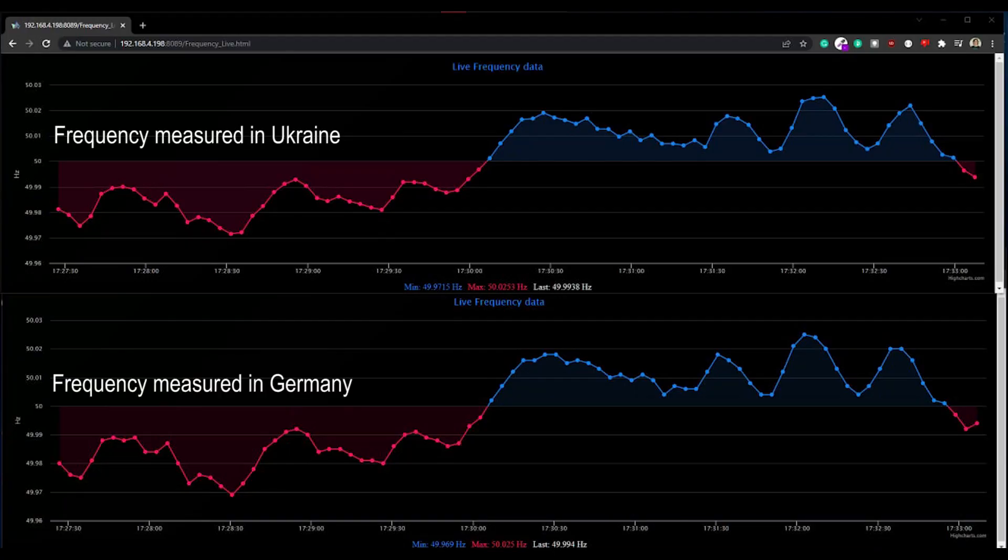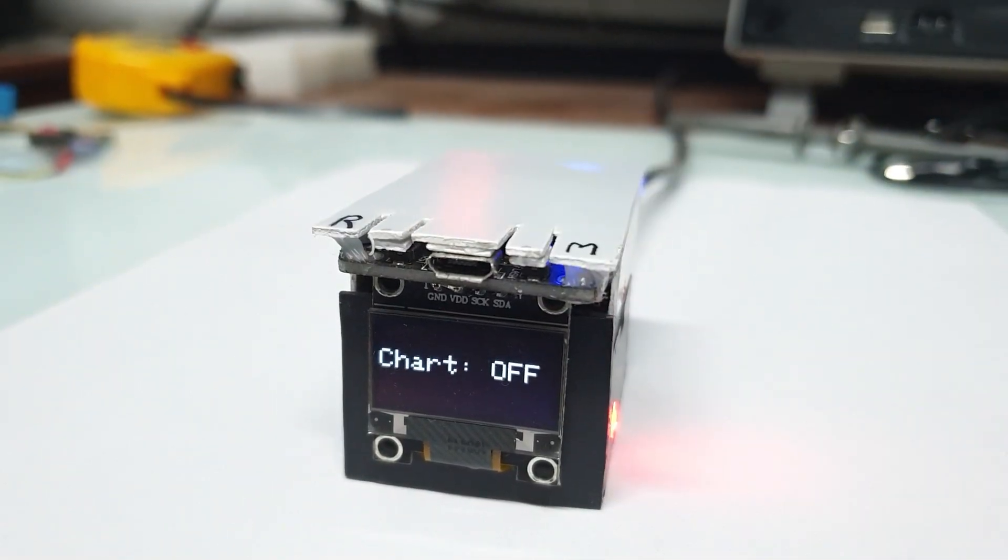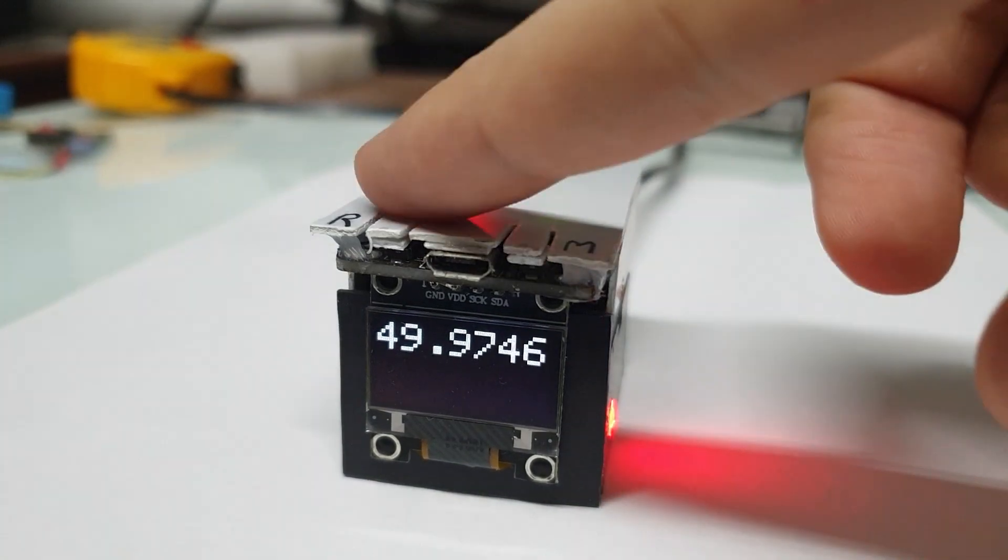On March 11th, Ukrainian power grid has been synchronized with Europe's power grids. So now this device here shows frequency not only in Ukraine, but in the whole of Europe.